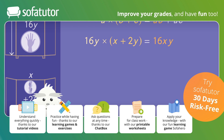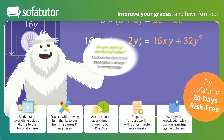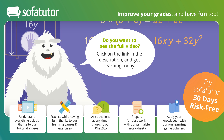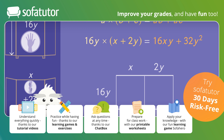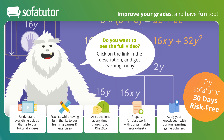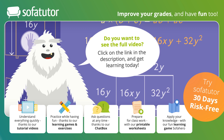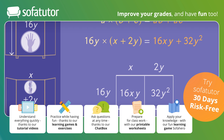The resulting binomial is 16xy plus 32y squared. You can also set this expression up using an area model created with one row and two columns. The row is labeled 16y, and the two columns are labeled x and 2y to model the x plus 2y. Multiply the row times each column to calculate the area of the rectangle's sections. The area of the first rectangle is 16xy and the area of the second is 32y squared. Add them together and you get the same answer: 16xy plus 32y squared.